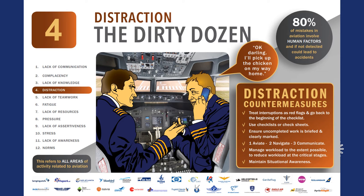It is estimated that 15% of maintenance-related errors are caused by distractions, which can result from a phone call, personal issues occupying the technician's mind, or being pulled from one task before it is completed to assist with another. When resuming a task after being distracted, it is good practice to go back three steps in the work procedure from when the distraction occurred. Use a detailed step-by-step written procedure and sign off each step only after it is completed. Flag or tag any work left incomplete, and immediately lock wire or torque fasteners as required when a step is complete.